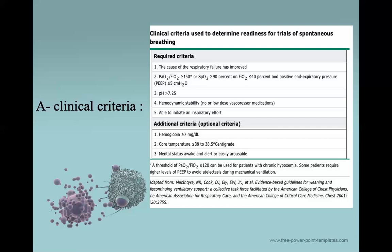The additional criteria include hemoglobin more than 7 — we all know the importance of hemoglobin in the oxygen-carrying capacity of the blood. The patient's core temperature should be less than or equal to 38 to 38.5°C, because any fever increases oxygen consumption and places more load on the respiratory system. Mental status: the patient must be awake, alert, or at least easily arousable.